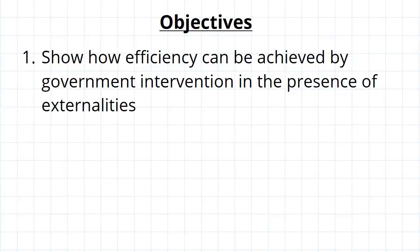G'day guys. In the last video we introduced Coase's Theorem, which says that when transaction costs are low, the problems caused by externalities can be solved using private negotiation. But when transaction costs are high, we might instead rely on government intervention to fix market failures. So in this video we'll go over the ways that government can go about trying to fix the problems caused by externalities.